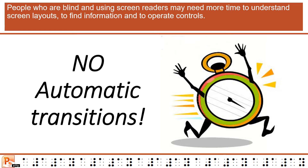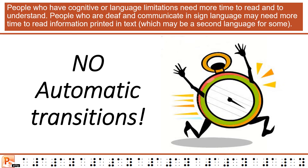People who are blind and using screen readers may need more time to understand screen layouts, to find information and to operate controls. People who have cognitive or language limitations need more time to read and to understand. People who are deaf and communicate in sign language may need more time to read information printed in text, which may be a second language for some.